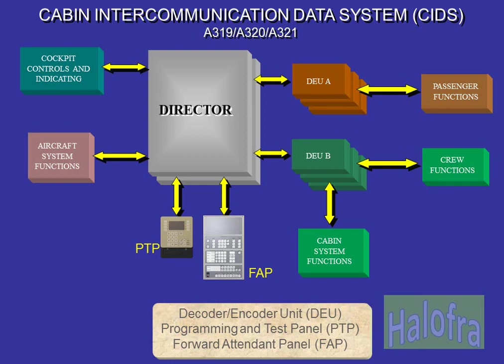It is linked to the forward attendant panel, FAP, to control the cabin functions. The director communicates through decoder-encoder units, DEUs, with the cabin, passengers and crew systems.